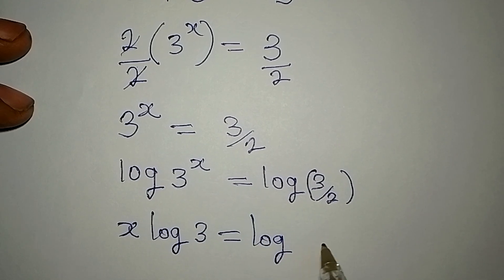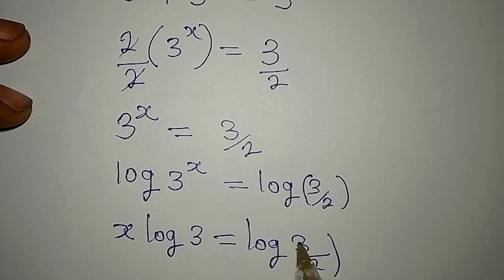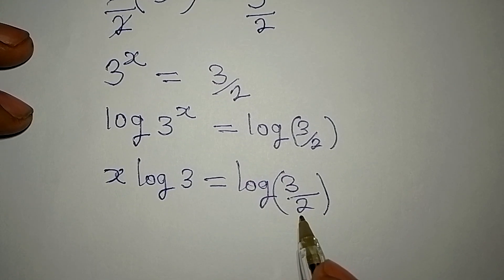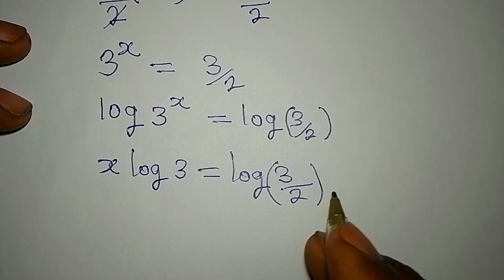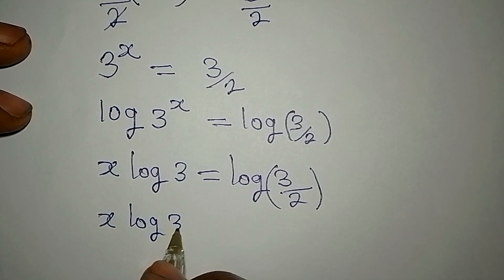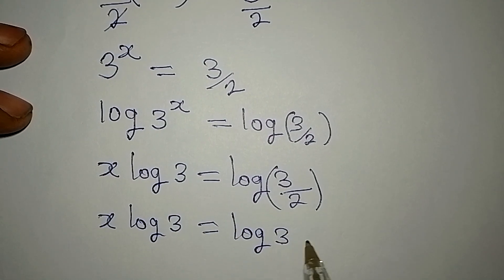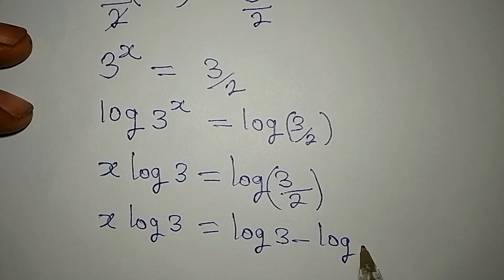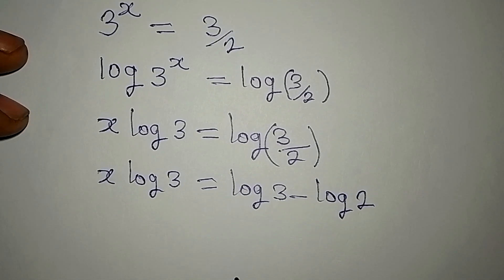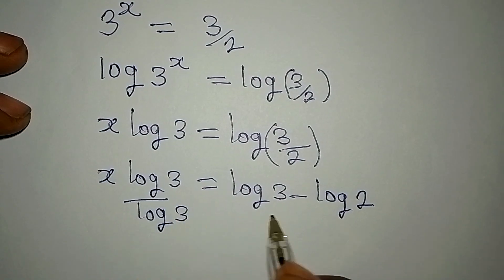x log 3 is equal to log of 3 over 2. Now, if you have this division it means that you're applying the log quotient rule: log 3 minus log 2. So we have x log 3 equal to log 3 minus log 2, according to one of the laws of logarithm.